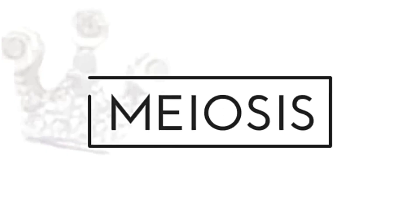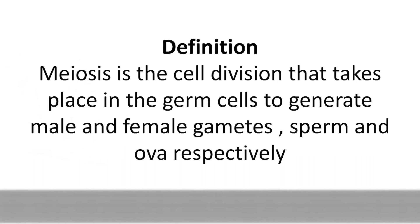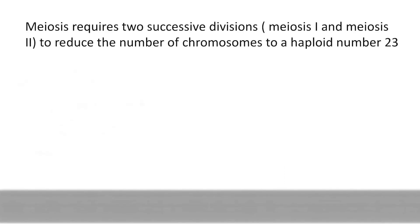Hey everyone, this is Vanati here with the Agamu Embryology webinar series, and today we're going to talk about meiosis. Starting off with the definition: meiosis is the cell division that takes place in the germ cell to generate male and female gametes, which are the sperm and the ovum respectively. Meiosis requires two successive divisions — meiosis one and two.